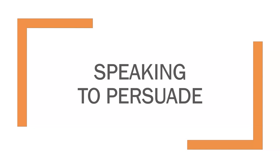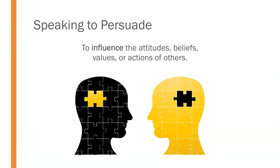What do we mean by speaking to persuade? When we speak to persuade, we seek to influence the attitudes, beliefs, values, or actions of others. That word 'influence' is key. We're trying to get people to change their mind or change their behaviors — we're trying to influence them in some way. So we're going beyond just sharing information and trying to influence them in one of these ways.